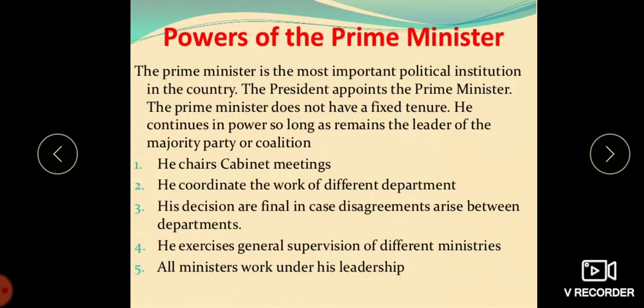Now let us move on to the Ministers. The Constitution of India provides for a Council of Ministers with the Prime Minister at the head to aid and advise the President. The President acts in accordance with their advice. He may require the Council of Ministers to reconsider their advice, but shall act in accordance with advice tendered after such reconsideration. Ours is a parliamentary form of government, so our President is only a nominal head of state. Thus, the Council of Ministers headed by the Prime Minister is the most powerful institution of the Indian polity.